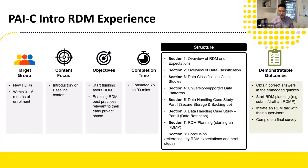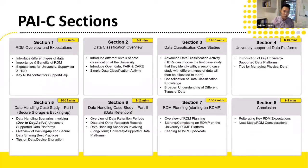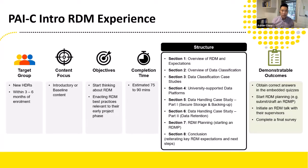At the end of the PISC training, there are demonstrable outcomes we hope HDRs will exhibit. The training is designed such that there will be activities or quizzes embedded within it. The end user can't proceed unless they get the correct answer, and we will provide feedback if they choose incorrect options on the first or second attempt. The quizzes and activities are formative in nature — they won't be penalized for trying. At the end of training, we hope they will start or submit some sort of RDM plan on the university's RDMP system.